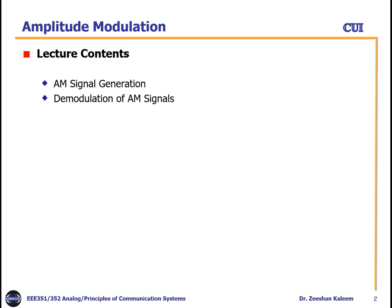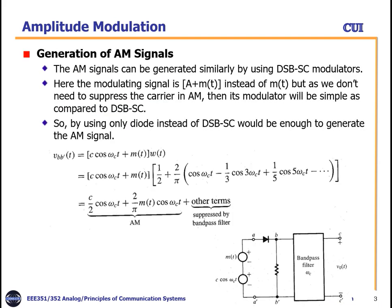Let's move to the lecture contents. In this lecture, we will cover two main topics. One is called AM signal generation — how we will generate the AM signal — and the other topic is demodulation of the AM signal. Here we will see how we can demodulate the AM signal on the receiver side. Let's discuss the generation of AM signals.